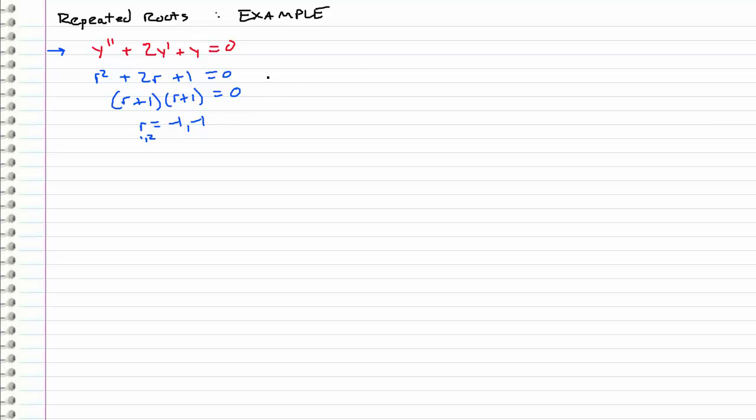And because it is a repeated root case, we only get one solution, which is e to the negative t. So this is our only solution that we have. We need another solution. And so we're going to use that reduction of order process. Y2 is equal to some unknown function times e to the negative t.